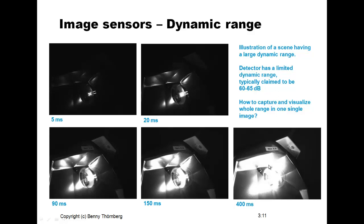But at the same time, all the parts related to the light bulb itself are strongly saturated. So we can understand from this picture that it is very difficult to find one exposure time that can cover all this dynamic range from the darkest to the lightest parts. A CMOS or CCD detector has a typical dynamic range of around 60 to 65 decibels according to data sheets. The question is: how to capture and visualize a whole range of light intensities in one single picture.